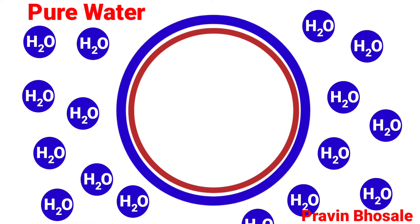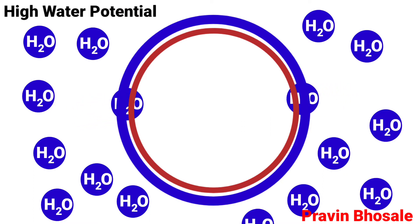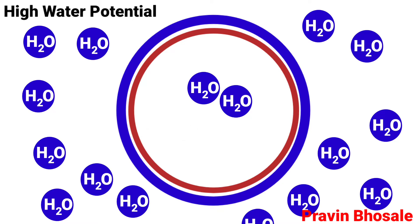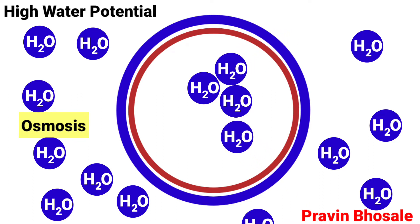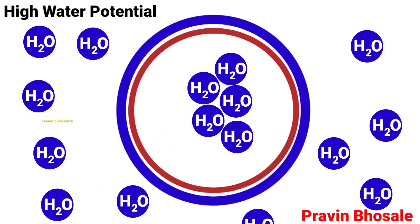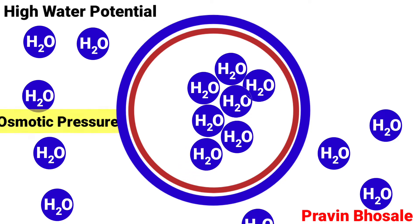This is a cell. Water from outside, where there is high water potential, will move inside the cell through the semi-permeable membrane. This process is osmosis — the diffusion of water through a semi-permeable membrane. When water molecules exert pressure during osmosis, it is called osmotic pressure. So water molecules move through the semi-permeable membrane by osmotic pressure.